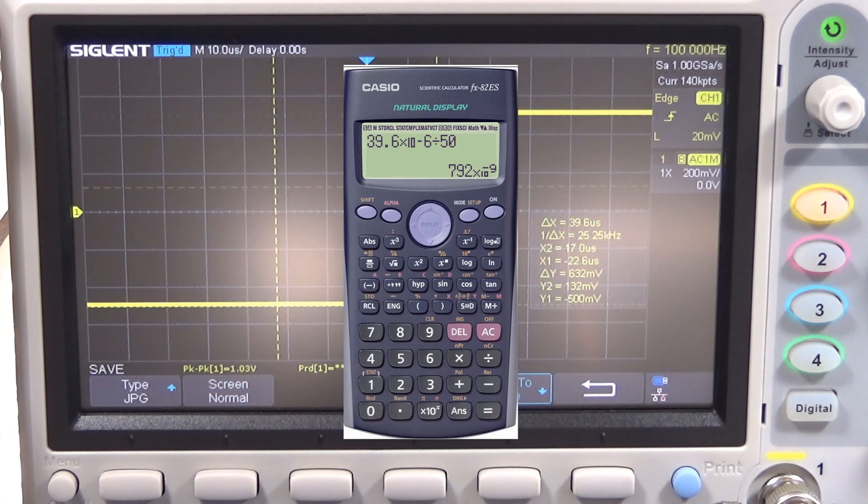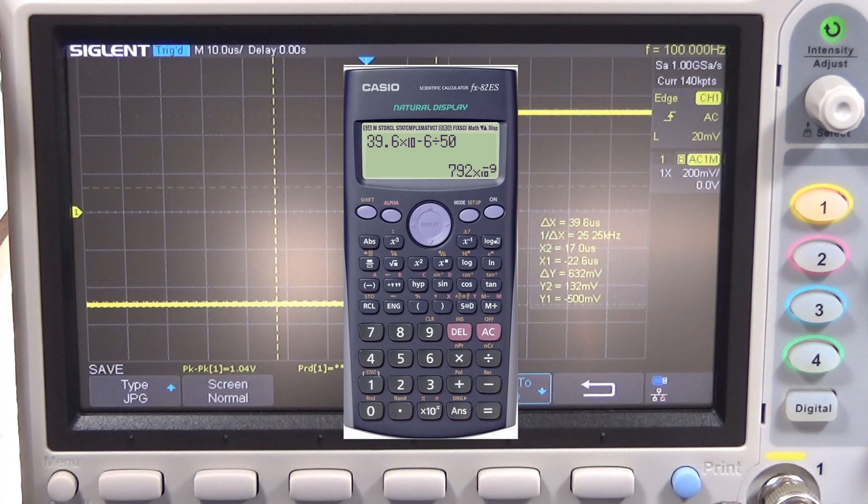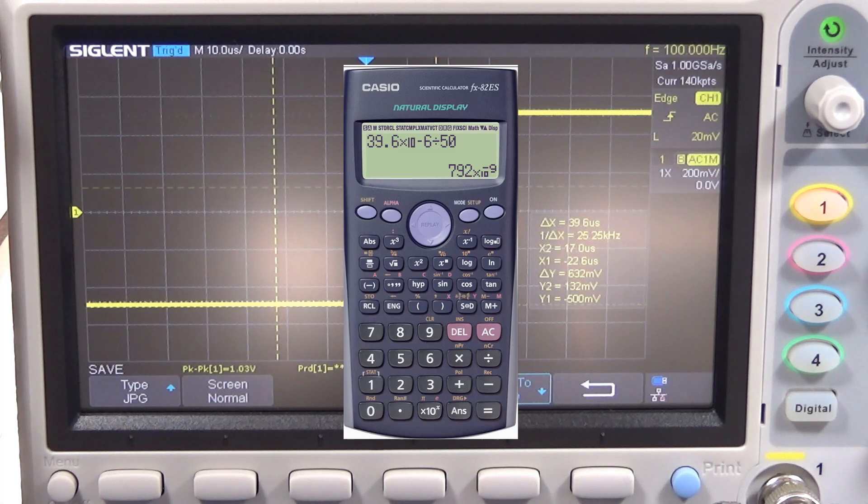...equals 792 nanofarads. In this case I will say probably this capacitor could be 1 microfarad. Let's remember guys, in a printed circuit board we have components in series and parallel, and the tendency is always to be lower. So probably it could be something between 810, 860, but I will take a value about 1 microfarad and keep it as it is.